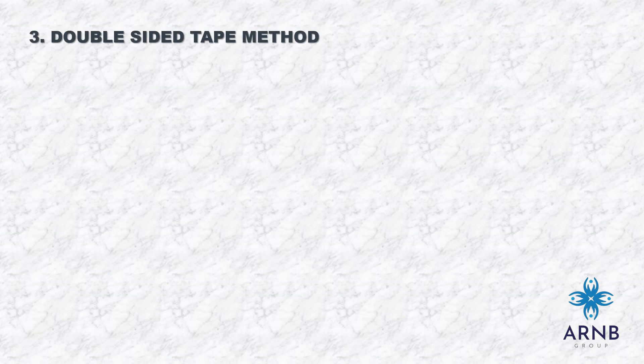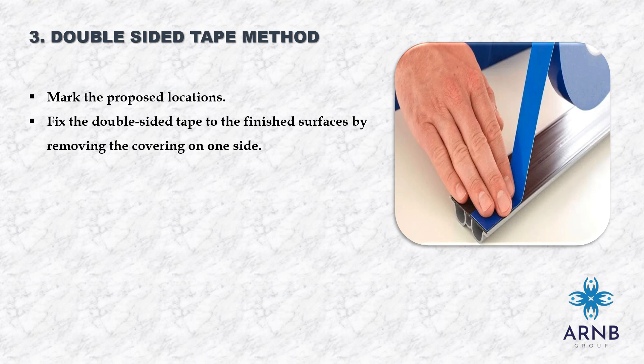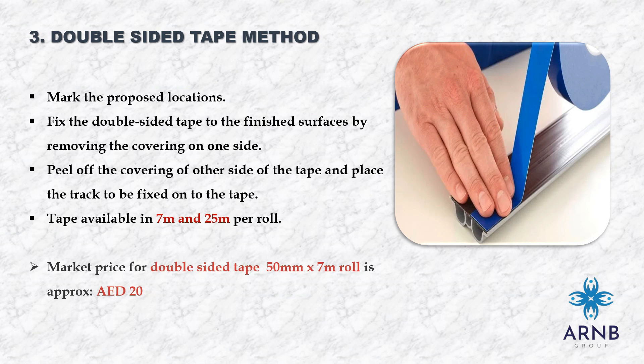The third method is the double-sided tape method, mainly used when doing partition work on finished floors. Mark the proposed location, fix the double-sided tape to the finished surface by removing the covering on one side, then peel off the covering on the other side and place the track onto the tape. In the market, tape is available in 7-meter and 25-meter rolls. Market price for a 50 mm wide, 7-meter roll is approximately 20 AED.